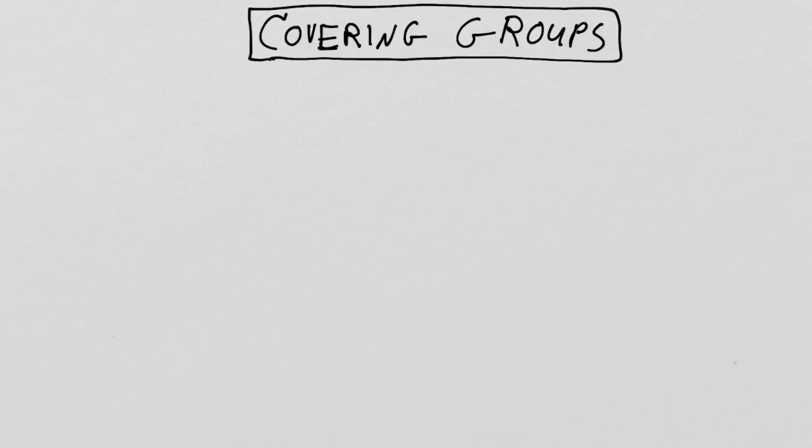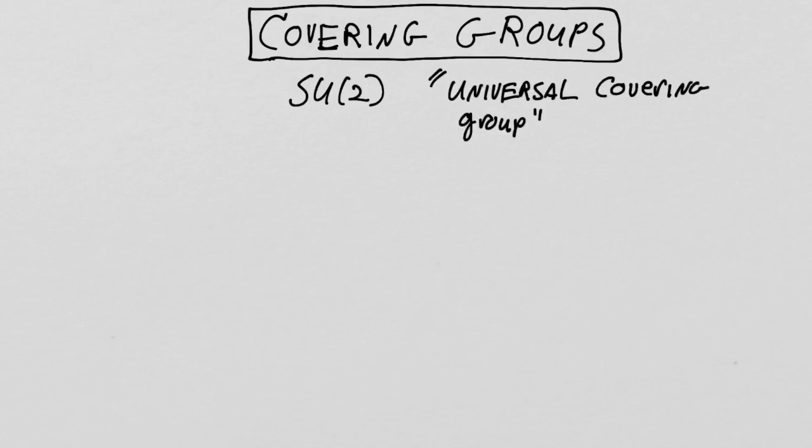We're going to cover some topics that Gilmore handled in earlier stages of the work. We've gone past his discussion of covering groups with the intention of coming back. I'm rearranging the order of things. But covering groups is really important because while you're studying this, you're always going to hear things like SU2 is the universal covering group of SO3, and you want to understand that.